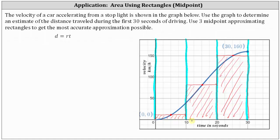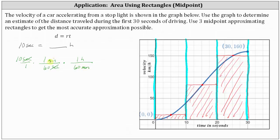Each subinterval has a width of 10 seconds, and we want to know what fraction of an hour that is. To do the conversion, we write 10 seconds as a fraction, then multiply by the unit fraction one minute over 60 seconds — seconds simplify out. Then we multiply by the unit fraction one hour over 60 minutes — minutes simplify out. This gives us 10 divided by 3,600 hours, which simplifies to one divided by 360 hours.